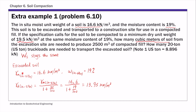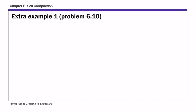That is the soil to be transported. Now let's look at the construction site. For the construction site, the specification requires that the compacted dry unit weight, γd COMP, is 19.5 kN/m³. The moisture content for the compacted soil is the same as at the excavation site — 19%. And the volume of compacted soil is given: V compacted = 2500 m³.